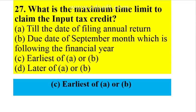What is the time limit to claim ITC? The maximum time limit is the earlier of: the due date of filing the annual return, or the due date of the September month return following the financial year. So whichever of those two is earlier should be taken as the time limit for ITC — effectively by 31st December or the due date of September of the following financial year.